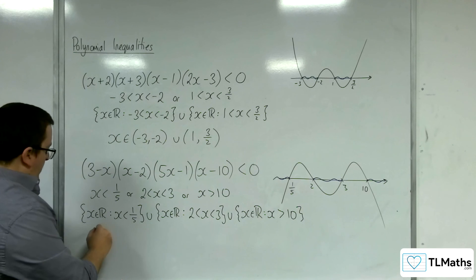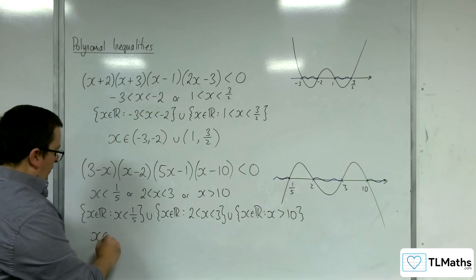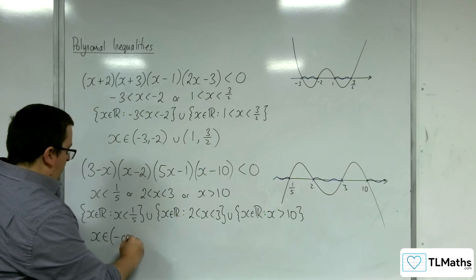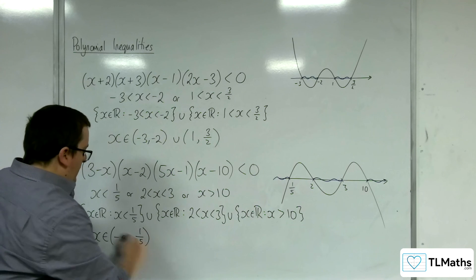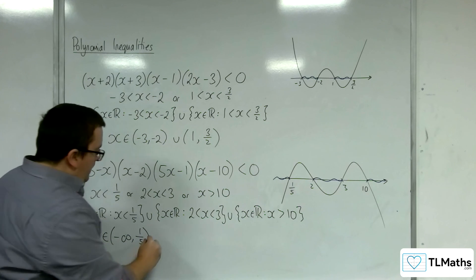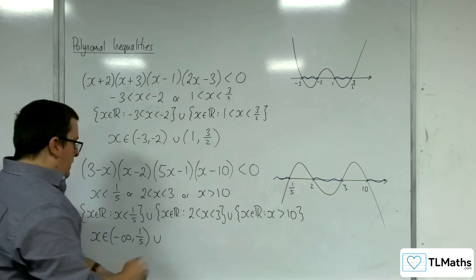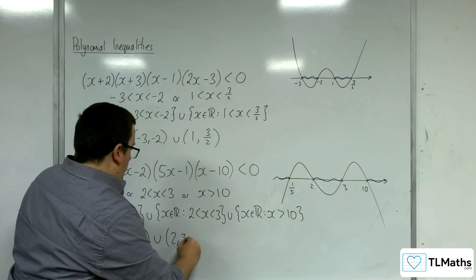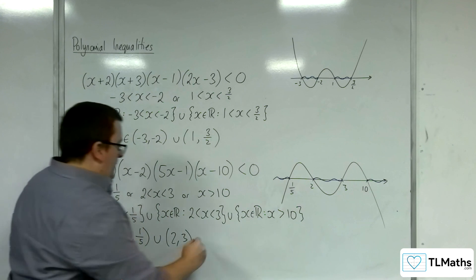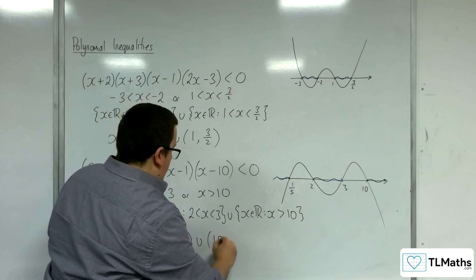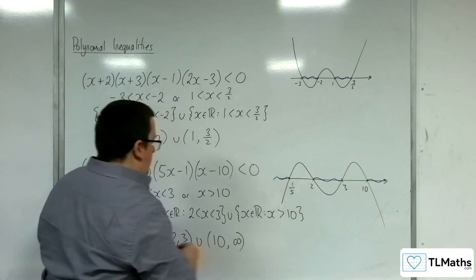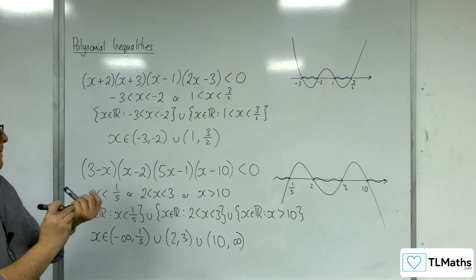And in interval notation, we would say x belongs to minus infinity to 1 fifth in curved brackets, because we're not including either, union 2, 3 for that region there, union 10, infinity for the last region.